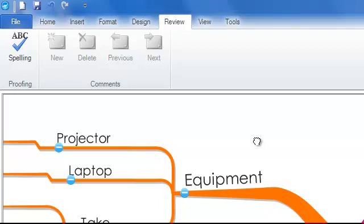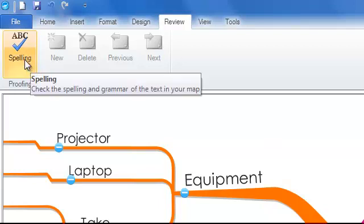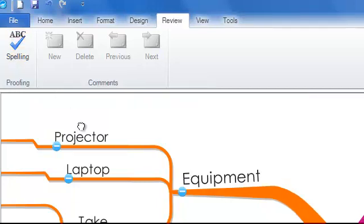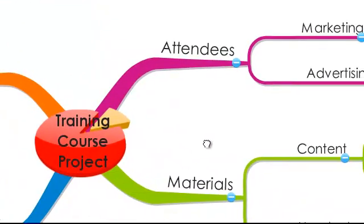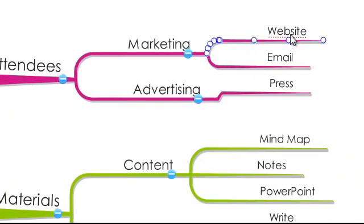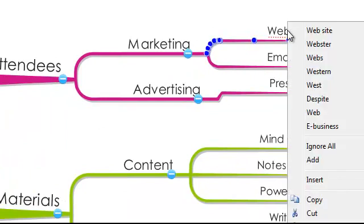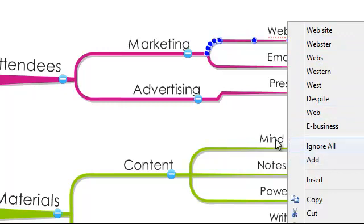Once you are within the review tab, you have a number of different options. Firstly, you can spell check your mind map. If there are any spelling mistakes on your map, they will be highlighted with a red wavy line. If you right mouse click on these, you will be able to see a list of alternative words which you can ignore or add if you choose.